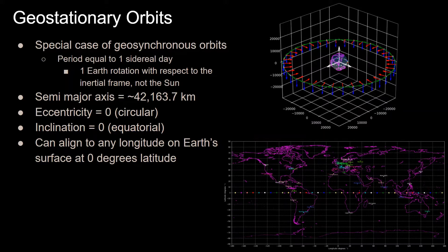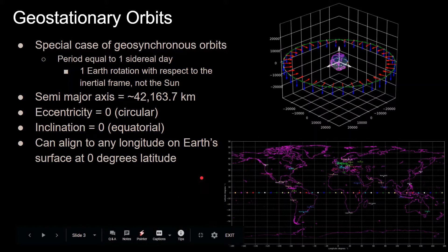Geostationary orbits are a special case of geosynchronous orbits since they have an eccentricity equal to zero, meaning they are circular orbits, and they also have zero inclination, meaning that they are equatorial, so they only go over the Earth's equator, which also means that for the ground tracks, they always have a latitude equal to zero.